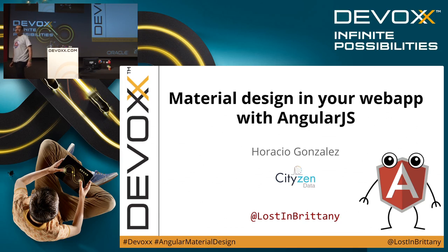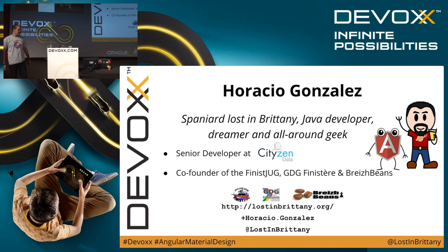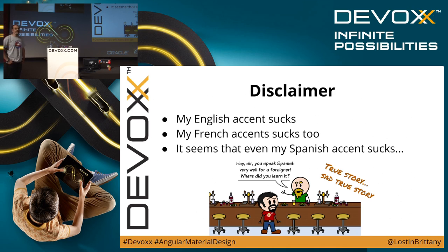Hello, thank you for coming here to see me when you could be in the next room seeing someone else doing their show - it means a lot to me. My name is Horace Gonzales. I am a Spaniard living in France and I work as a developer at Citizen Data, a startup that deals with collecting, storing and analyzing data. I am also the leader of the FinistèreJS group. My English accent isn't very good, but my French accent is at least as bad, and even my Spanish accent isn't good anymore, so I beg you to excuse my accent.